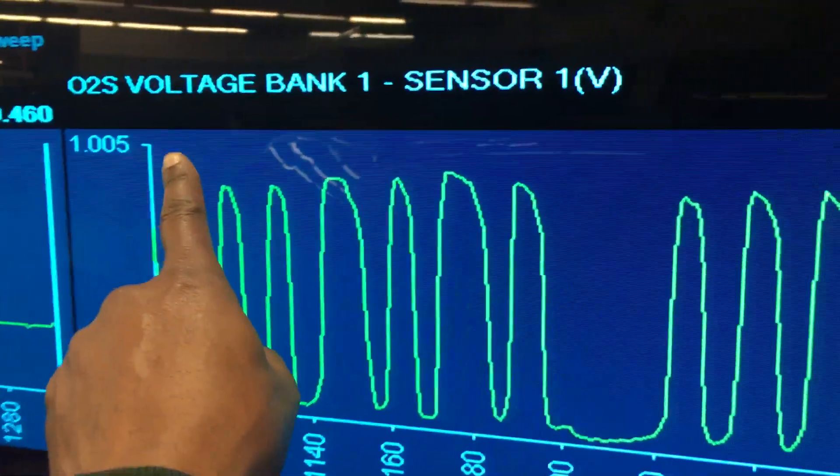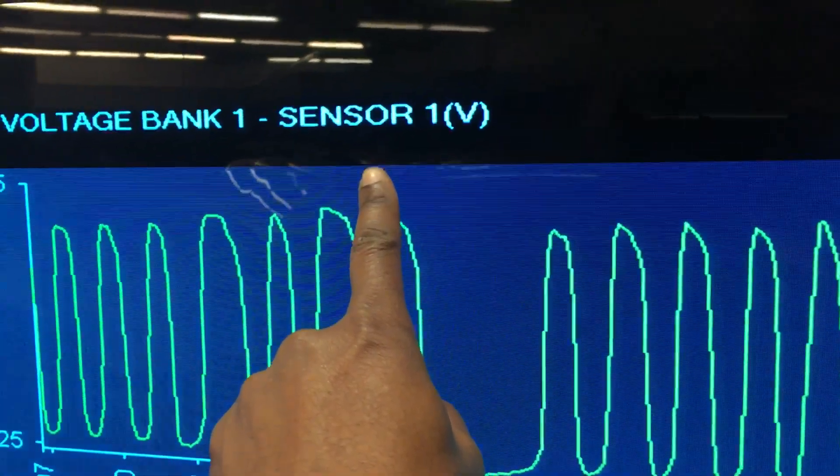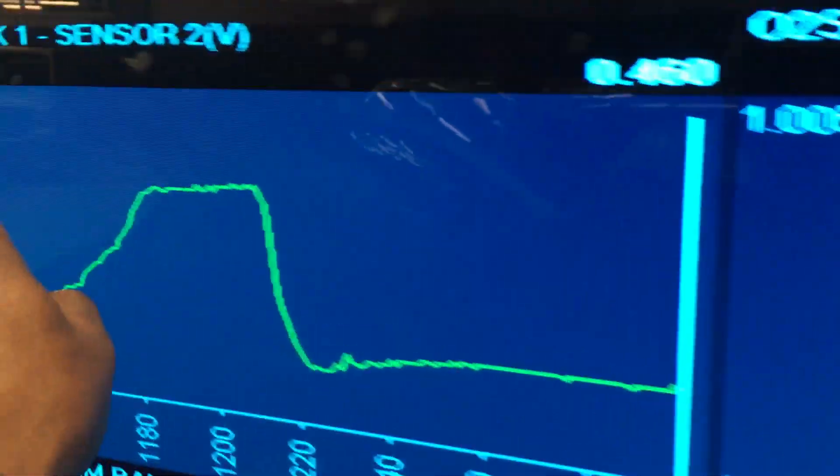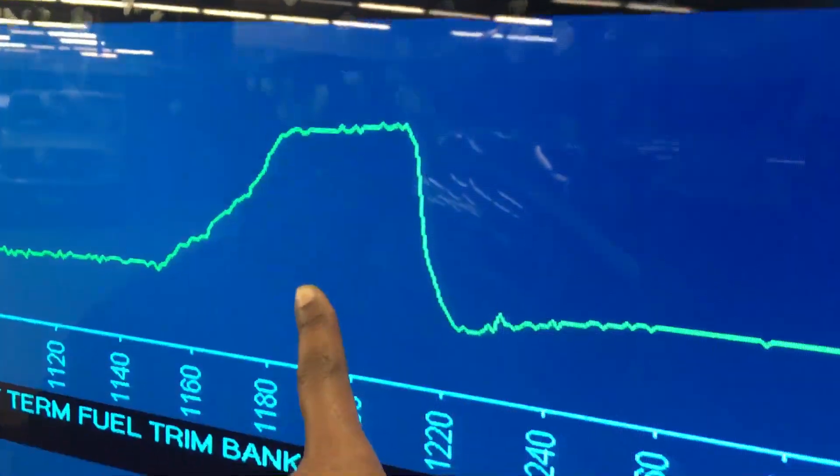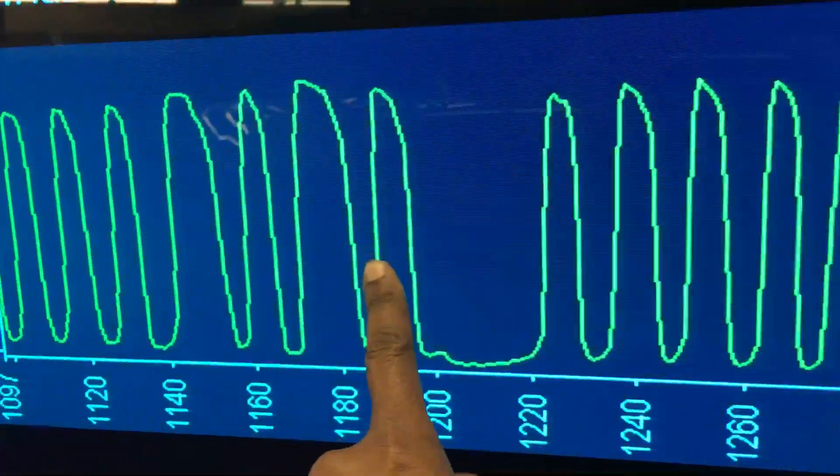This is the front O2 sensor right here. Bank 1 Sensor 1, that's in front. With the gas in it that you put. That's Bank 1 Sensor 2 behind the cat. That's behind the cat, it's in front of the cat.